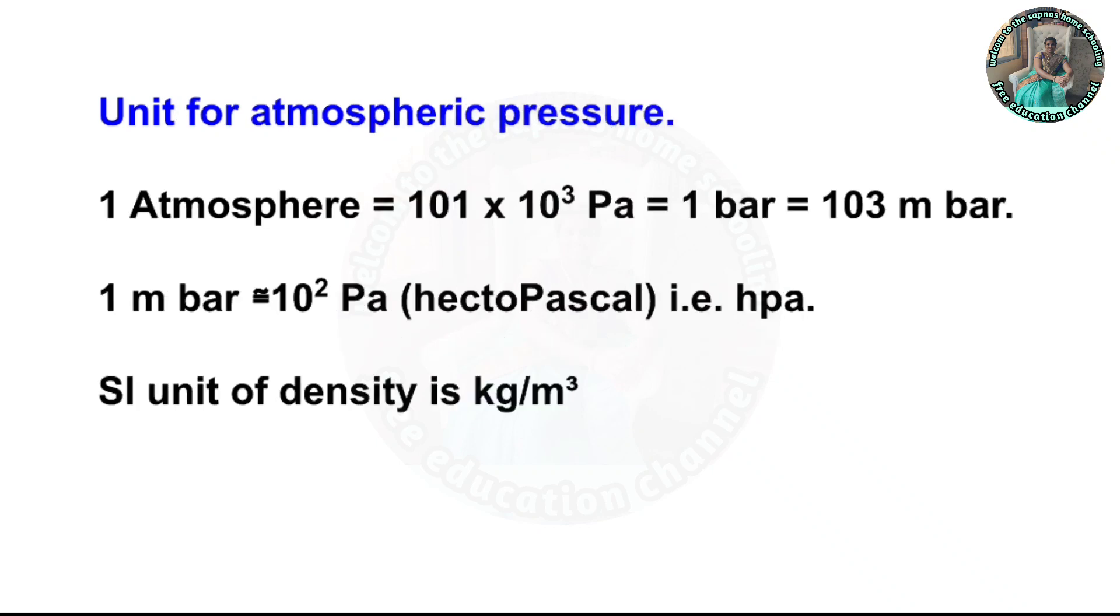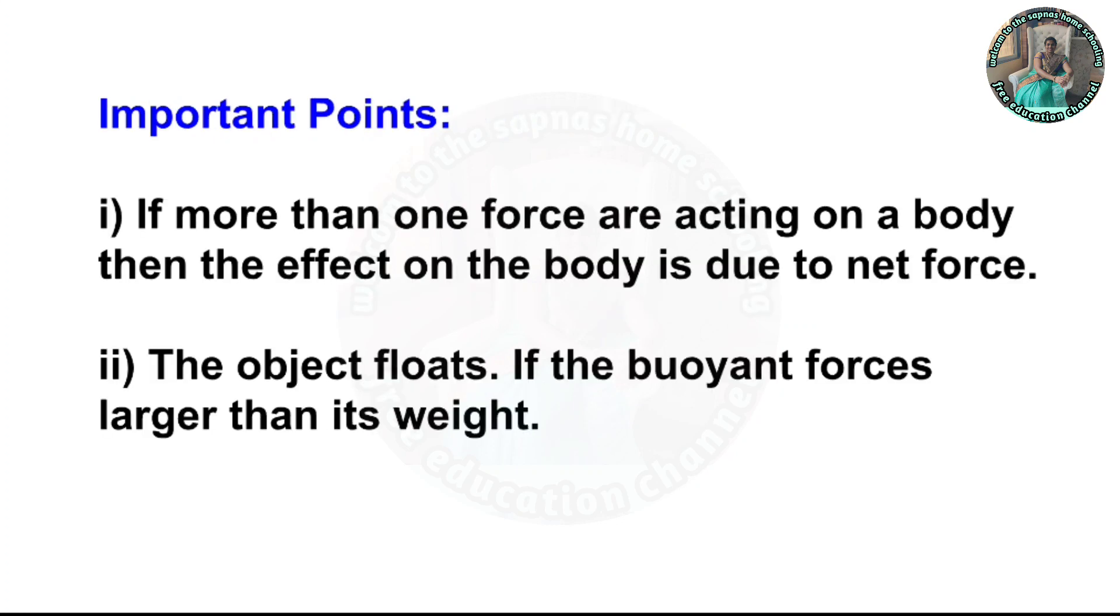Unit for atmospheric pressure: 1 atmosphere equals 101 into 10 raised to 3 Pascal, equals 1 bar, equals 10 raised to 3 millibar. 1 millibar equals 10 raised to 2 Pascal or hectopascal (hPa). SI unit of density is kg per meter cube.